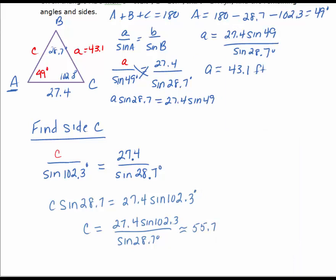Now to check your work, we'll put the 55.7 on side C. To check your work, if you just set up the three ratios, I know that A, which is 43.1, divided by the sine of 49 degrees should equal side B, 27.4, divided by the sine of 28.7.